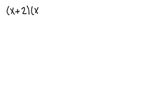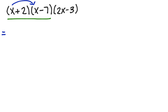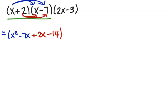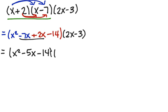One more example: x plus 2 times x minus 7 times 2x minus 3. We have three binomials to multiply, so we take care of the first two first. x times x is x squared; x times negative 7 is negative 7x; 2 times x is positive 2x; and 2 times negative 7 is negative 14. The third binomial 2x minus 3 is still there, so it may help to collect like terms first, giving us x squared minus 5x minus 14, times 2x minus 3.